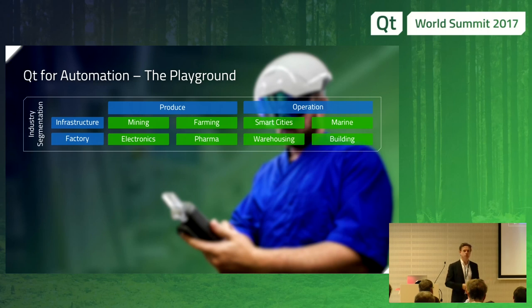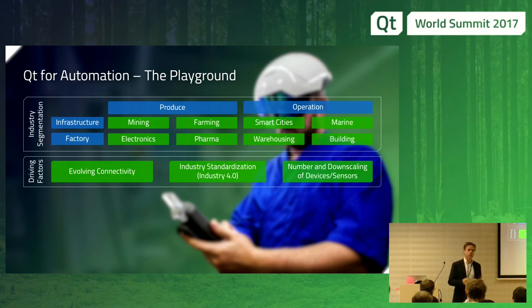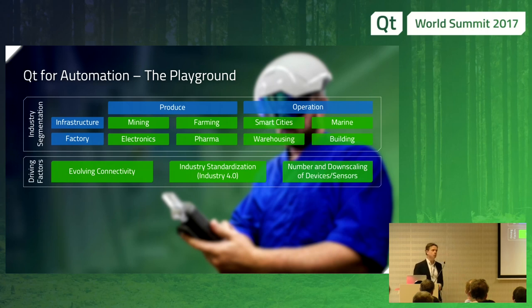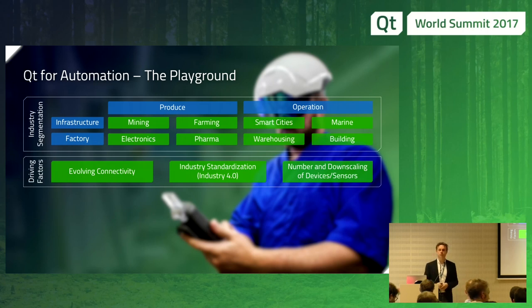That's the area where we want to add value from the Qt perspective. This includes embedded devices, but also companion apps and desktop applications. The driving factors for automation customers include evolving connectivity, industry standardization as a hot topic, and the heavily increasing number of devices and data to operate and manage. The future will be automated, and the future will be written in Qt — more efficient, with software and large infrastructures needed to address that.